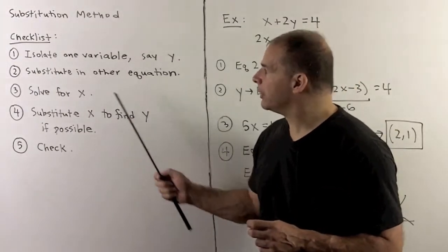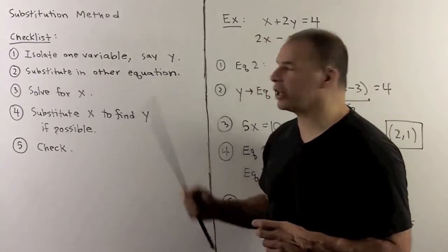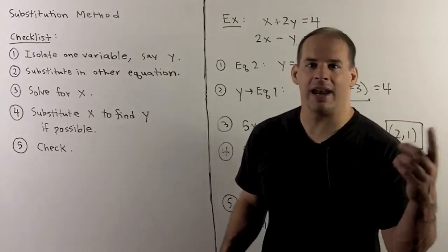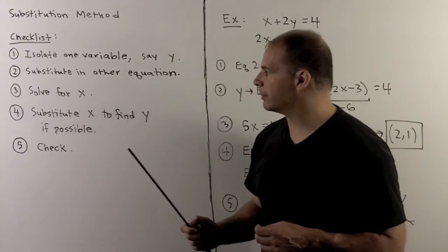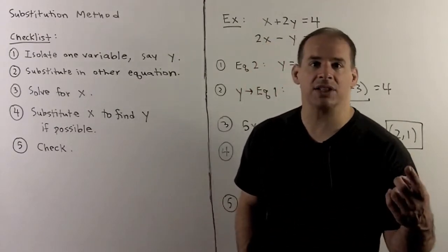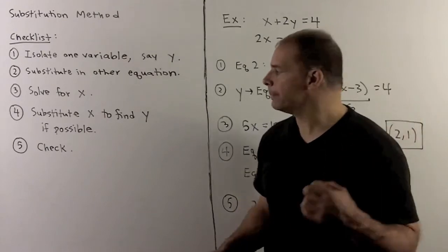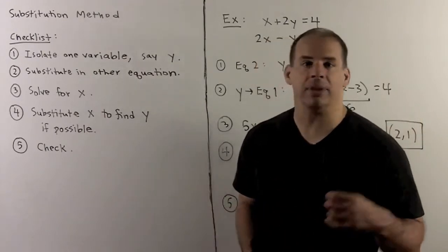Then, with y isolated, we substitute into the other equation. That will remove y completely from the equation. Then I can solve for the other variable, which we're calling x. Once I find x, I can put that back into either equation in the beginning, and that will let us find y, if it's possible.